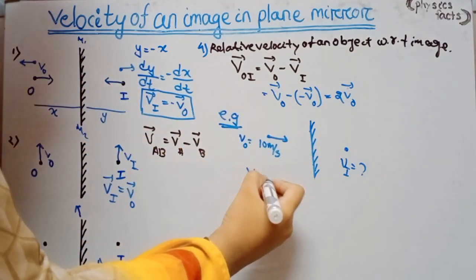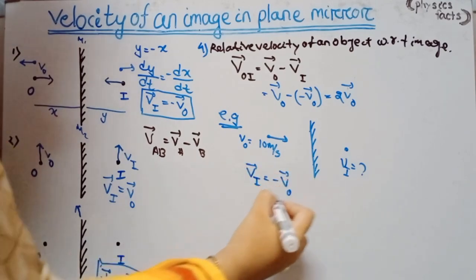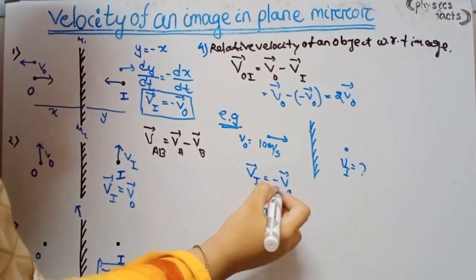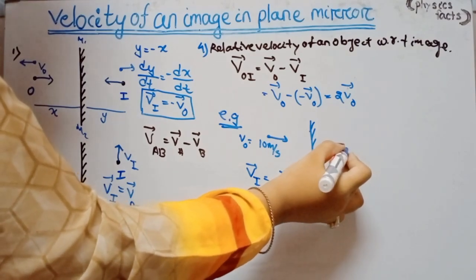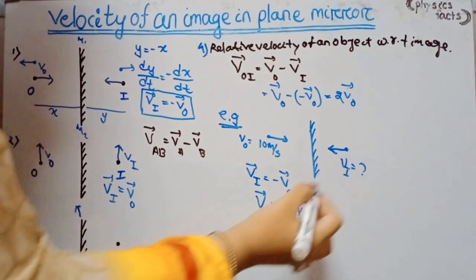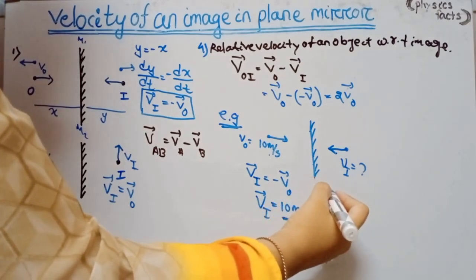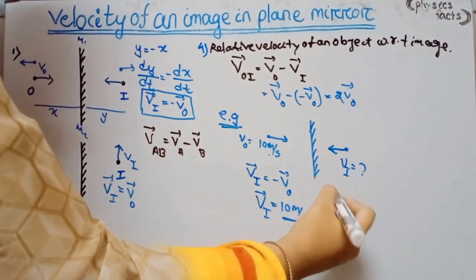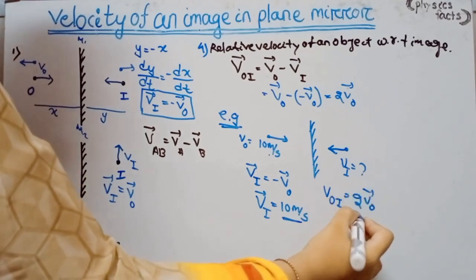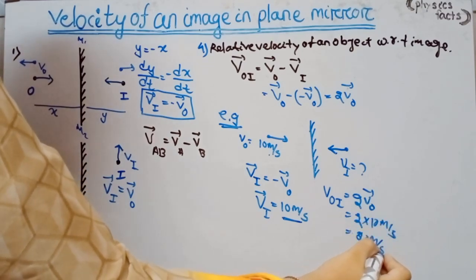The velocity of the image equals minus the velocity of the object, so it is 10 m/s but in the opposite direction — same magnitude, opposite direction. The relative velocity of the object with respect to image is 2 × 10 = 20 m/s.